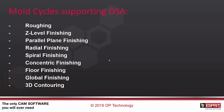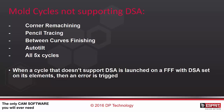Now let's see which mold cycles support different stock allowance. The supported cycles are: roughing, Z-level finishing, parallel plane finishing, radial finishing, spiral finishing, concentric finishing, floor finishing, global finishing, and 3D contouring. Cycles that do not support different stock allowance include corner machining, pencil tracing, between curves finishing, and chaining. Auto tilt is also not supported — meaning if you try to apply auto tilt on any 3-axis cycle it will not be supported. All 5-axis cycles are also not supported.